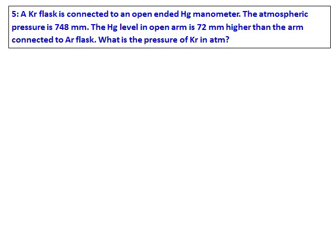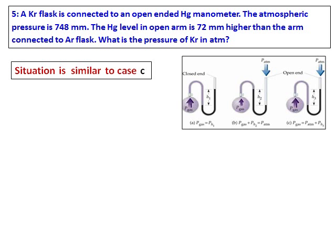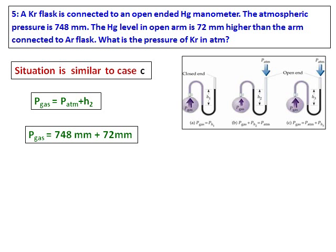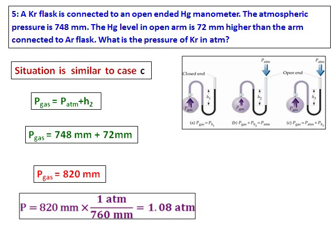Question: a krypton flask is connected to an open-ended mercury manometer. The mercury level in the open arm is 72 mm higher than the arm connected to the krypton flask — what is the pressure of krypton in atmosphere? Since the open end is higher, this is case C. Using P_gas = P_atmosphere + height: atmospheric pressure is 748 mm, height is 72 mm, giving 820 mm, then converted to atmosphere.